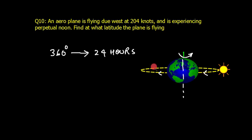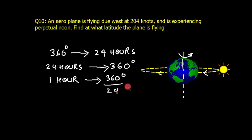The speed of the sun will be 24 hours covering 360 degrees. So in one hour, the sun will move 360 degrees divided by 24, which is 15 degrees. You can convert degrees into minutes: 15 times 60 equals 900 nautical miles.